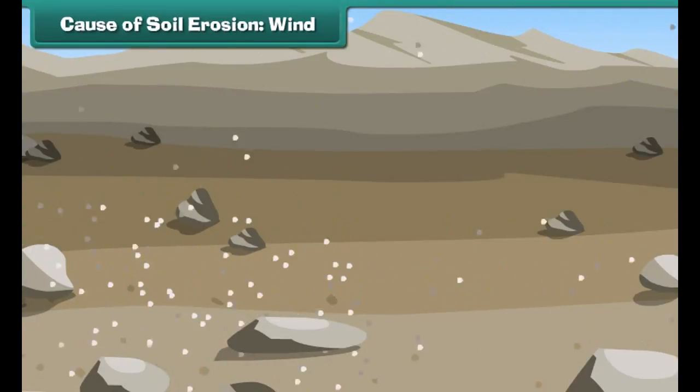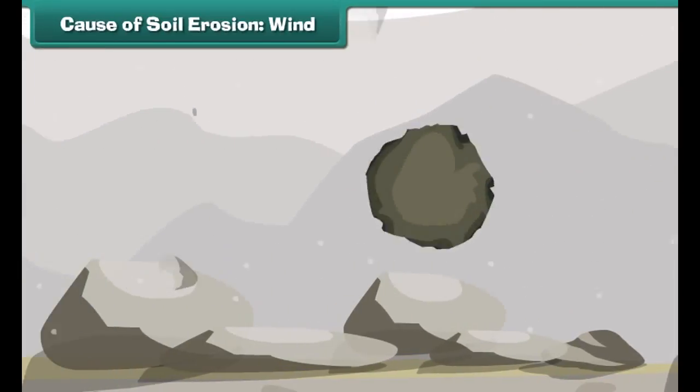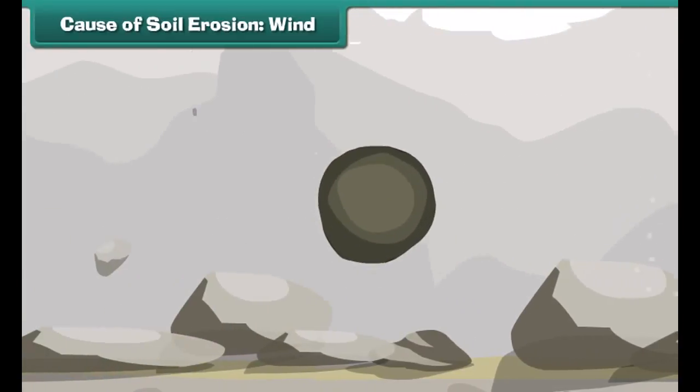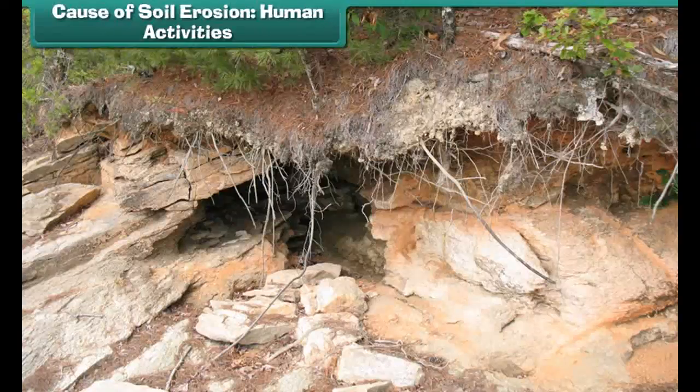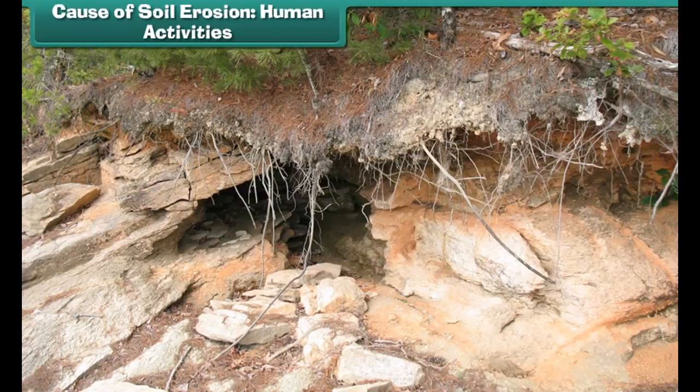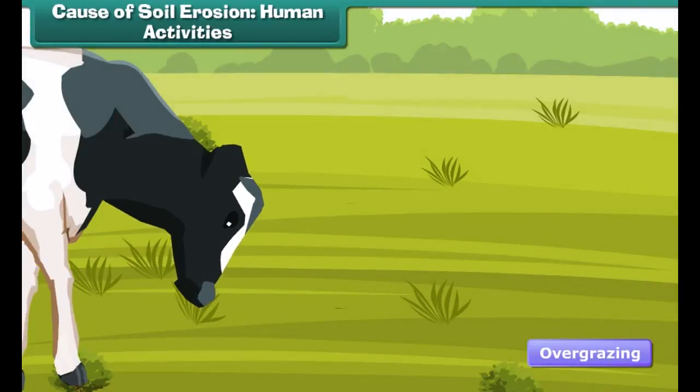The other agent responsible for soil erosion is the wind. Wind picks up the finer soil particles and takes them to another location. During storms, heavy wind takes away the bigger soil particles to a distant place, and that causes soil erosion.